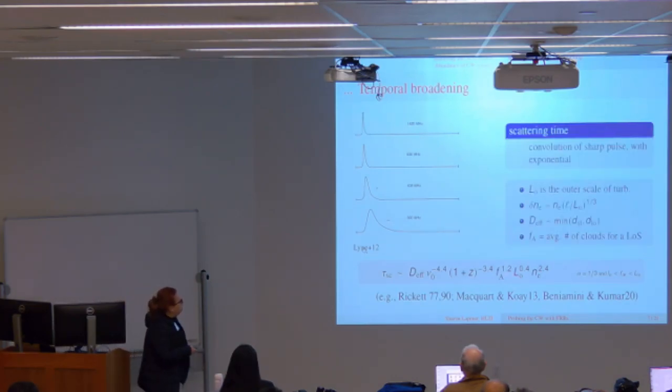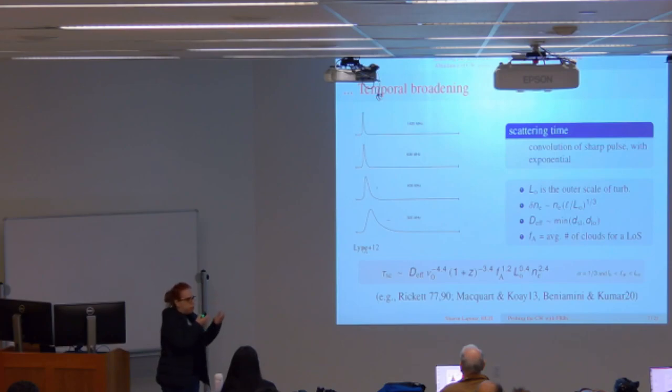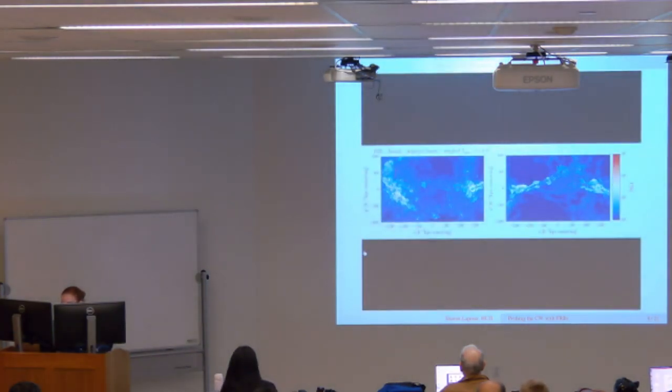Just to mention all the properties here: L0 is the outer scale of turbulence. The density fluctuation is modeled as a simple power with a Kolmogorov spectrum. And F8, which is an important parameter here, is basically the average - if you go through a scattering screen, it's the average number of clumps or clouds you'll encounter through some line of sight.